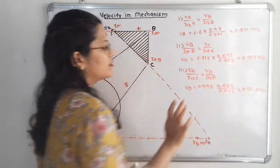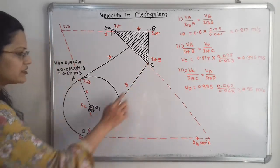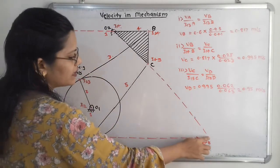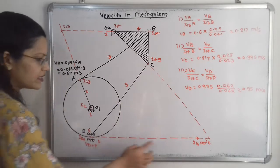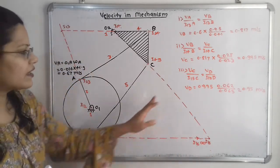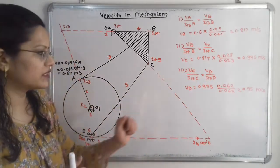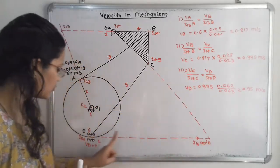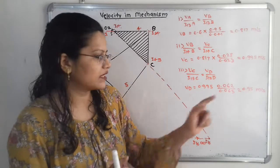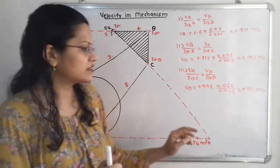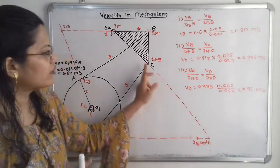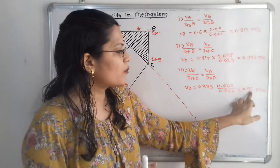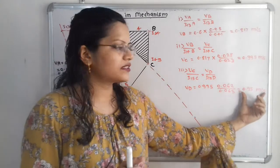Vc = 0.817 × (0.028 / 0.023) = 0.995 m/s. Now for C and D with common center I15: Vc / (I15 to C) = Vd / (I15 to D). Here I15 to D = 62 mm = 0.062 m and I15 to C = 65 mm = 0.065 m. So Vd = 0.995 × (0.062 / 0.065) = 0.95 m/s. This is our final answer: the velocity of the needle at point D is 0.95 m/s.